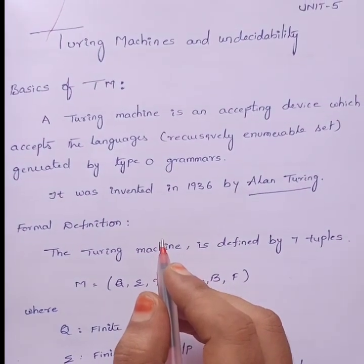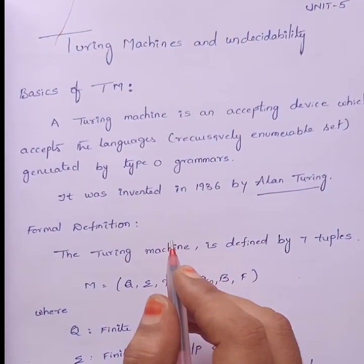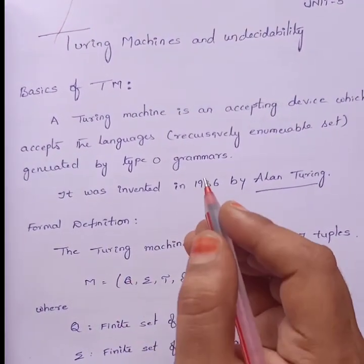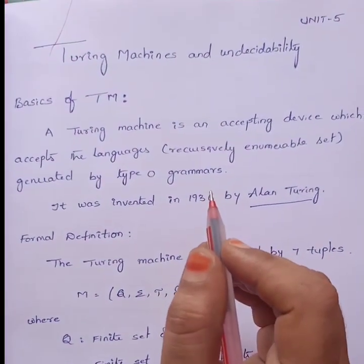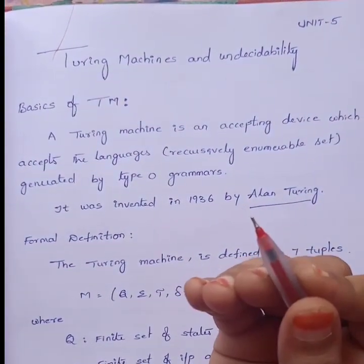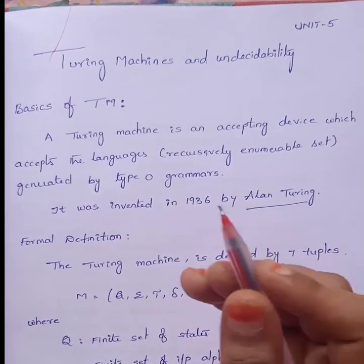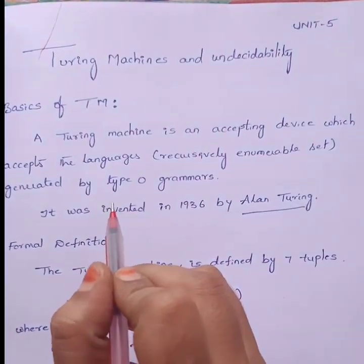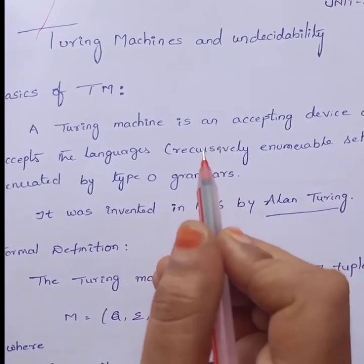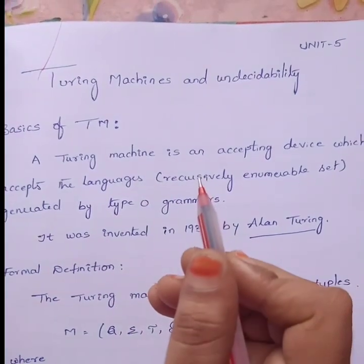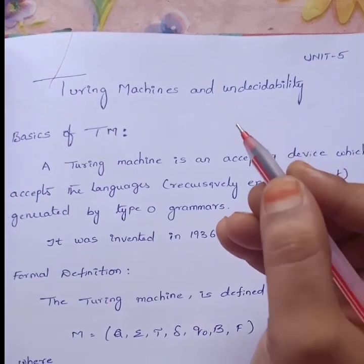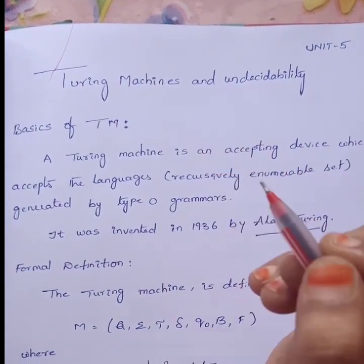Hi viewers. In the previous class I discussed some of the terminologies or definitions regarding Turing Machine. In this class, I am going to discuss the basics of Turing Machine — those are formal definition, mechanical diagram, and instantaneous description. In the previous class I already discussed what a Turing Machine is, how it is designed, and which language the Turing Machine design accepts.